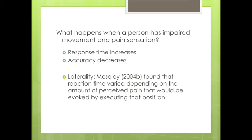So what happens when a person has impaired movement and pain sensation, such as a person with CRPS or phantom limb pain? According to a study by Moseley, the response time increases and accuracy decreases with laterality tasks. In the same study, they found that the reaction time to each picture varied primarily according to the pain that would be evoked by executing that mental movement, rather than simply as a function of awkwardness of movement. So if your client has an impaired response to imagined positions in laterality, what about imagined movement of that impaired limb?